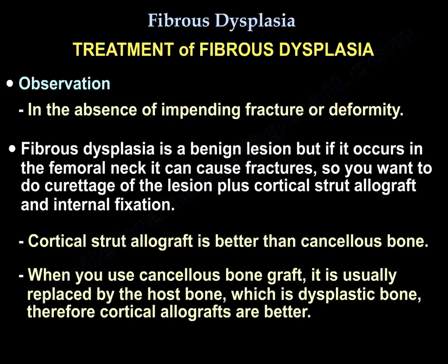For femoral neck lesions, you want to do curettage of the lesion plus a cortical strut graft and internal fixation. The cortical strut graft is better than cancellous bone, because when cancellous bone graft is used, it is usually replaced by the host bone, which is dysplastic bone. Therefore, cortical allografts are better.